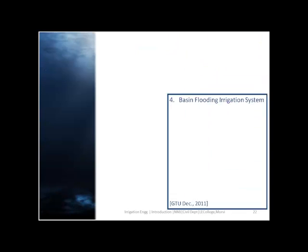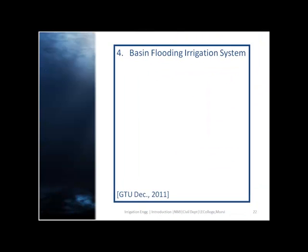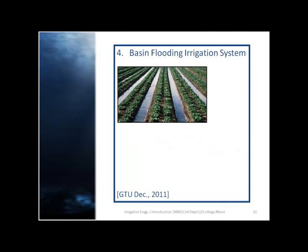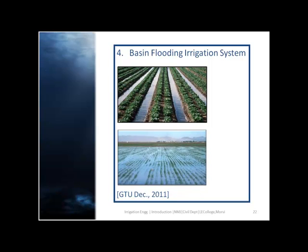The next method is basin flooding irrigation. This method is a special type of check flooding and is adopted specially for orchard trees. One or more trees are generally placed in the basin and the surface is flooded as in the check method by ditch water.